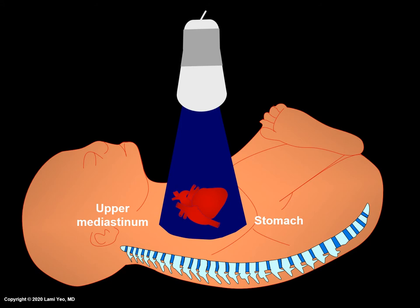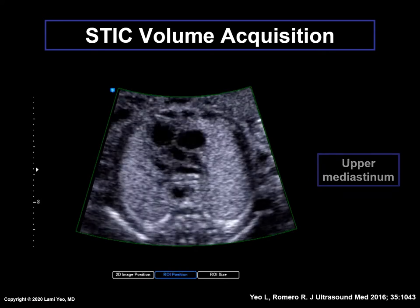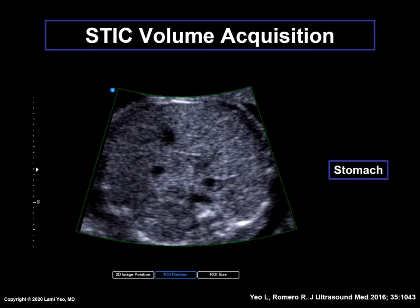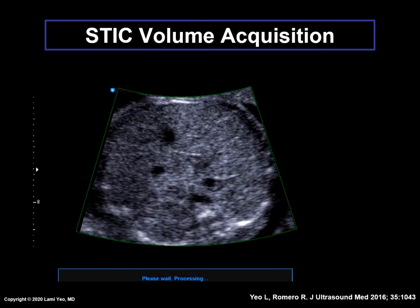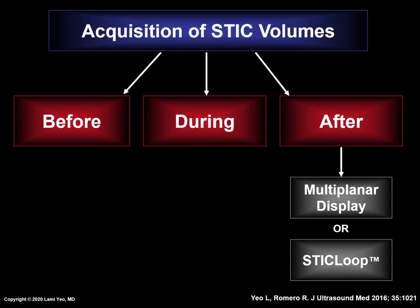With the four-chamber view as the acquisition plane and applying appropriate settings such as the acquisition angle, the volumetric ultrasound probe should automatically sweep from the fetal upper mediastinum down to the stomach. Here is an example of a STIC volume being acquired. It sweeps from the upper mediastinum, through the four-chamber view, and then down to the fetal stomach. When completed, the STIC volume display comprises thousands of two-dimensional images acquired through the area of interest during this single automated sweep. There are three main time points that deserve focus: before the acquisition, during acquisition, and immediately after, in which either the multiplanar display or STIC loop is examined to determine if the volume is appropriate for analysis.